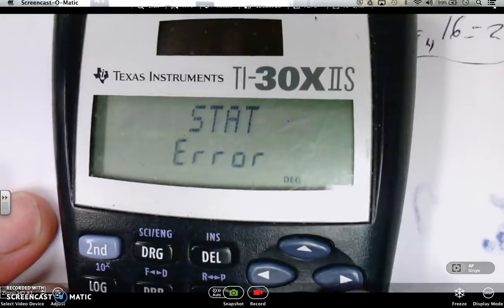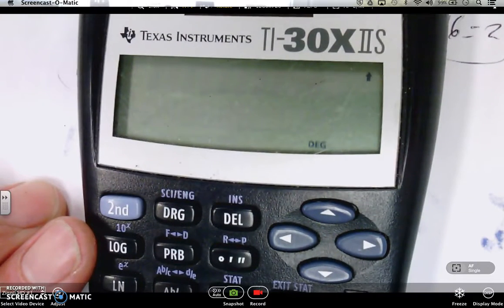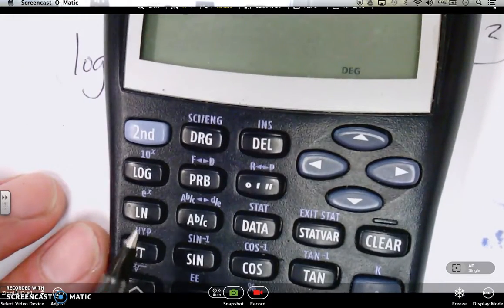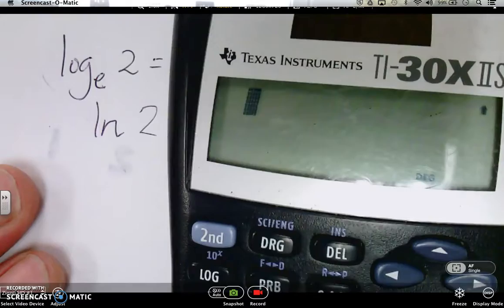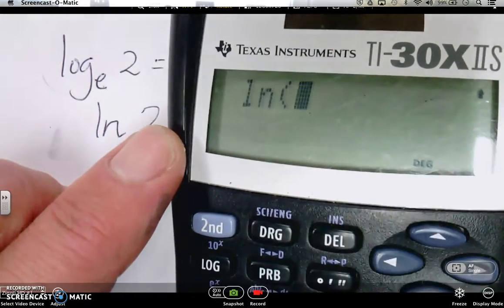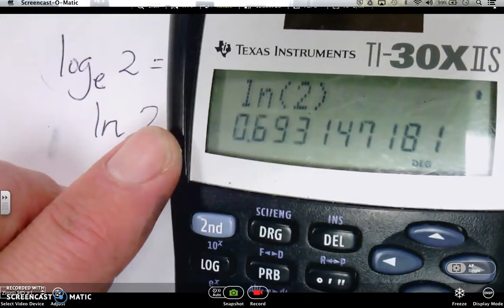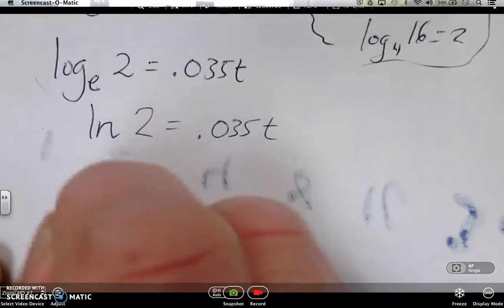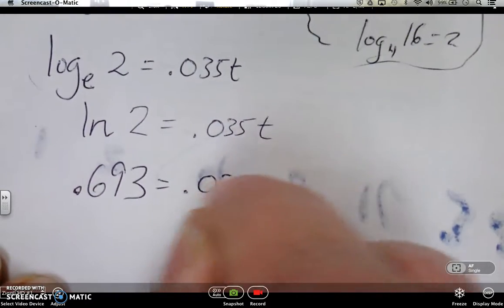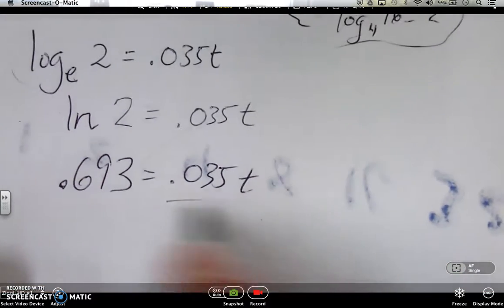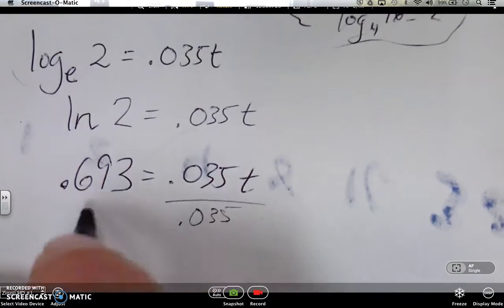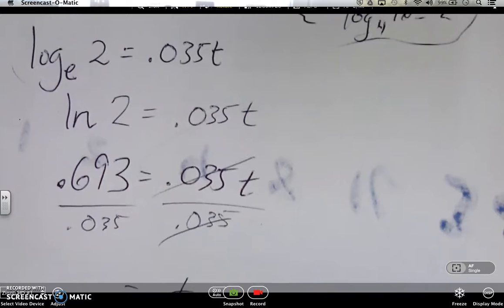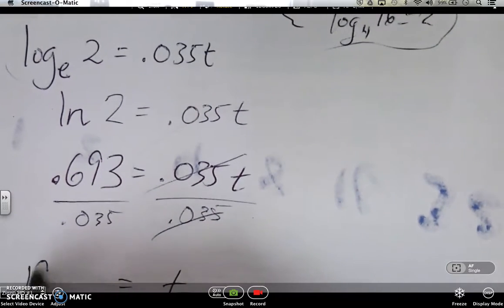Now we're going to turn to the calculator. So two buttons here. There's the log button. There's the ln button. That's what we want for natural log. We want this natural log button. So we're doing ln of 2. That's it. .6931, blah, blah, blah. Let's go .693. And there you go. Oh, we want t alone? So divide by that. And that's it. So t would be .693 divided by .035 and 19.8.